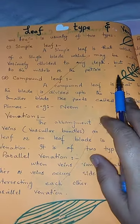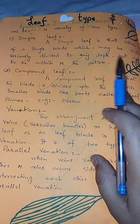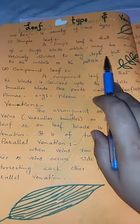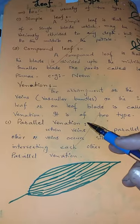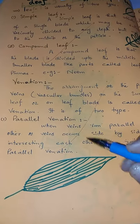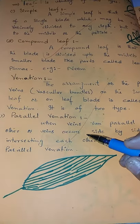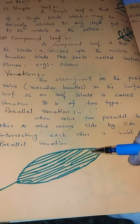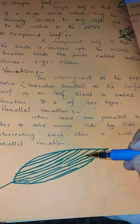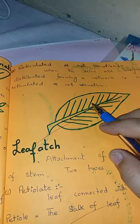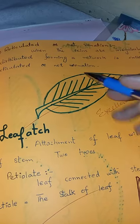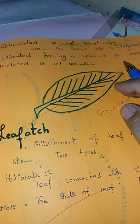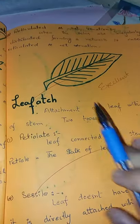The leaf has a blade or lamina, which may be divided. Venation refers to the arrangement of veins in the leaf. Venation types include parallel and reticulate. Reticulate venation forms a network pattern within the leaf.